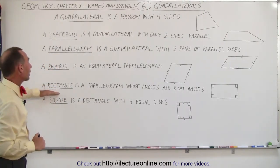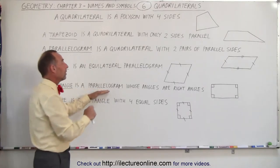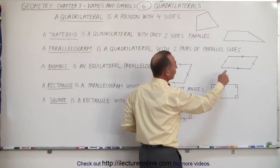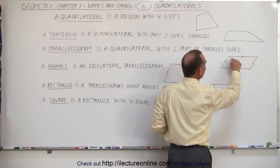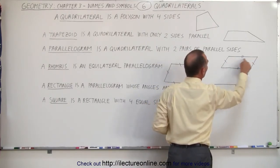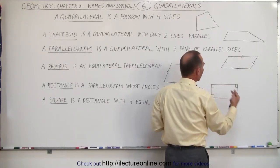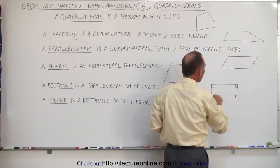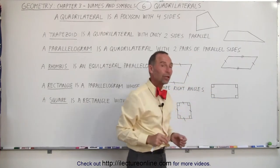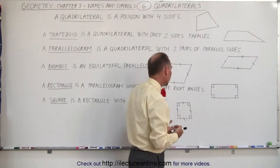A rectangle is a parallelogram, but with the special condition that all the angles are right angles. Notice that two angles of a parallelogram are obtuse and two are acute. When we go to a rectangle, that's no longer the case — all four corners are equal to one another. They're all 90 degrees, and therefore they're all called right angles.